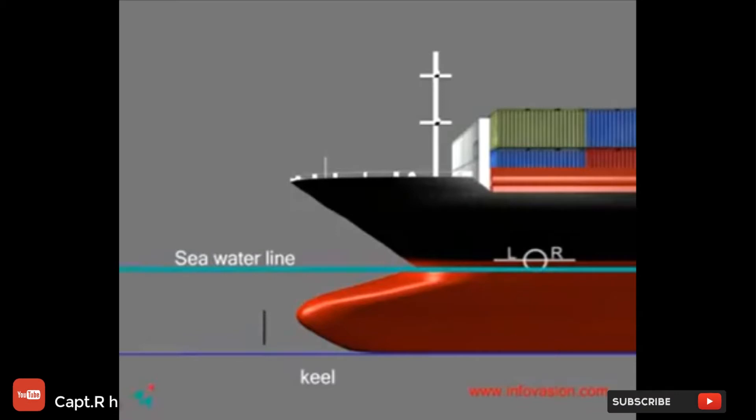The Plimsoll line mark allows one to know the safe draft. Draft is the vertical distance between the water line and the bottom of the hull or keel.